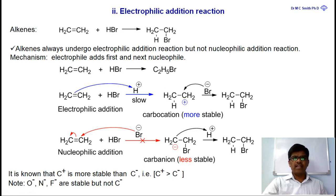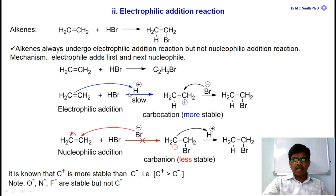For example, HBr is an acid where heterolytic fission of the H–Br bond gives H⁺ and Br⁻. In these two ions, H⁺ is an electrophile and Br⁻ is a nucleophile. The ethylene molecule donates its bonded pair of electrons to form a bond with H⁺. That is why this is called an electrophilic addition reaction.